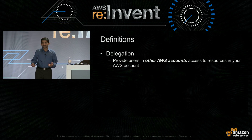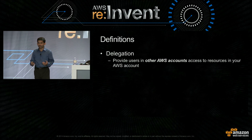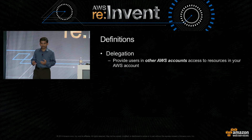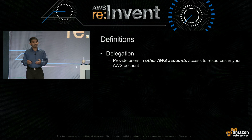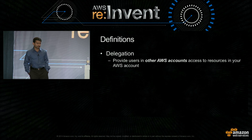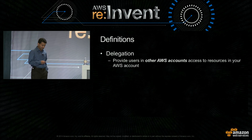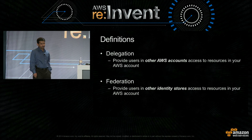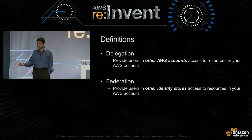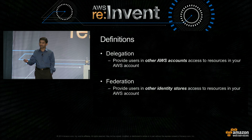When I say delegation, what I mean is you are providing users in other AWS accounts access to resources in your account. Federation, on the other hand, means that you are providing users in other identity stores access to resources in your account.